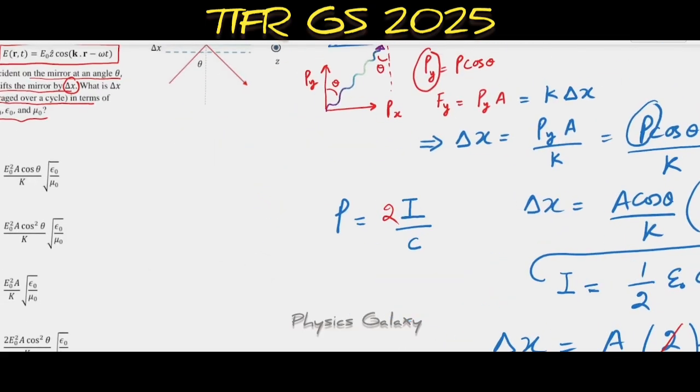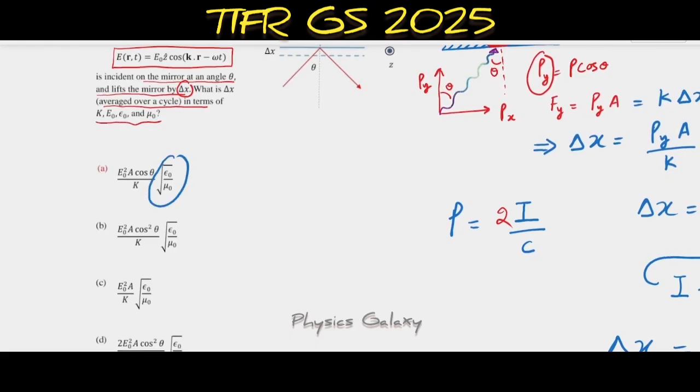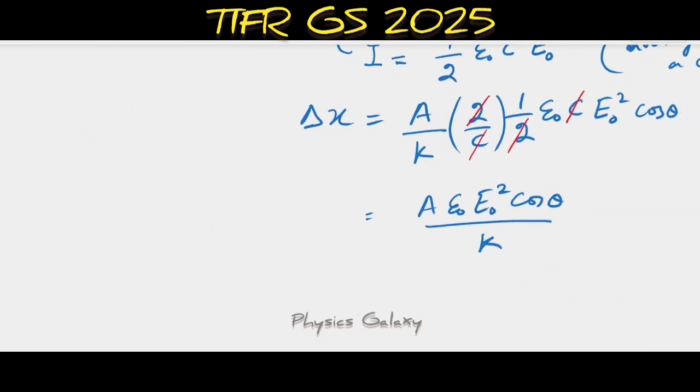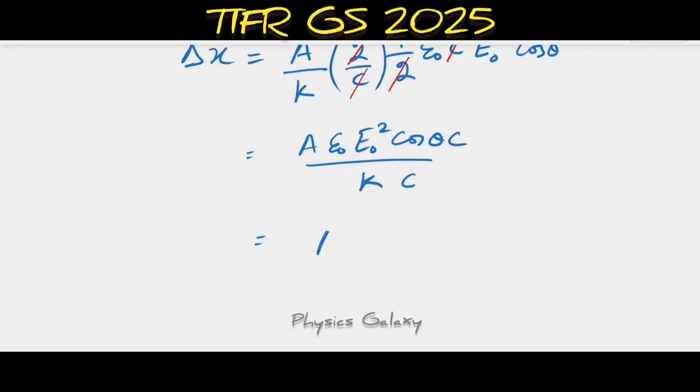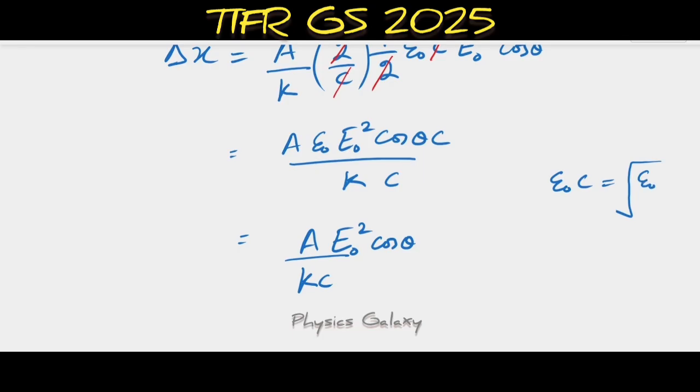Because the answers are in terms of √(ε₀/μ₀), we can write it that way. If we multiply by c in numerator and denominator, it becomes (A E₀² cos θ)/(Kc), and ε₀ times c equals √(ε₀/μ₀). So the final answer is (A E₀² cos θ √(ε₀/μ₀))/(2Kc).